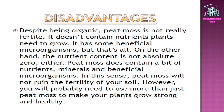Disadvantages of peat: Despite being organic, peat moss is not really fertile — it doesn't contain the nutrients plants need to grow. It has some beneficial microorganisms, but that's all. On the other hand, the nutrient content is not absolute zero; peat moss does contain a bit of nutrients, minerals, and beneficial microorganisms.